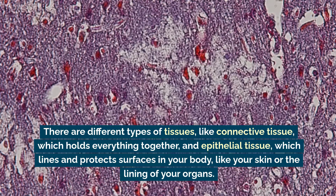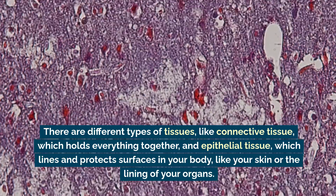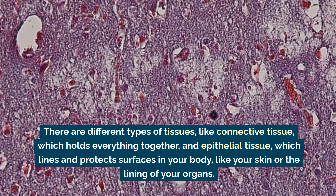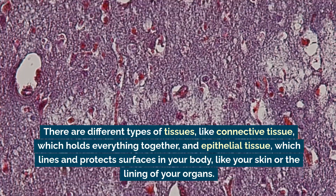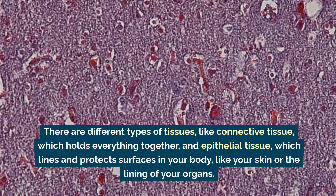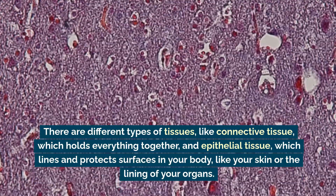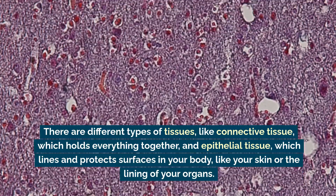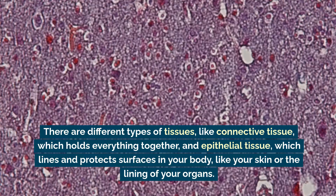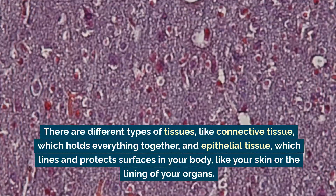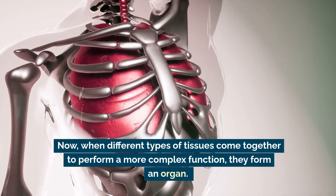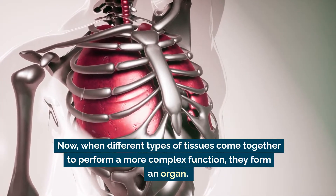There are different types of tissues, like connective tissue, which holds everything together, and epithelial tissue, which lines and protects surfaces in your body like your skin or the lining of your organs.